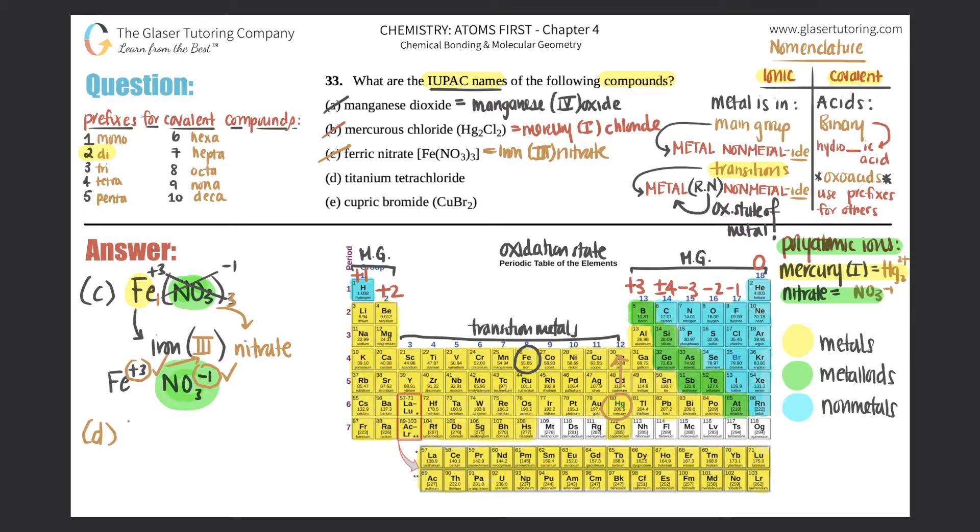And now we have D titanium tetrachloride. So here we go again with seeing tetra where it shouldn't be. Tetra usually is four for covalent compounds. So this one kind of has the same thing as what was happening with manganese dioxide. So we will treat it the same exact way. We got to get the formula first. So titanium is a transition metal. That's Ti. And now they're telling me that it's tetra, which stands for four chlorides, which is chlorine. So titanium Cl4. I have four chlorines. So now I have to take this compound and write the actual IUPAC name for it.